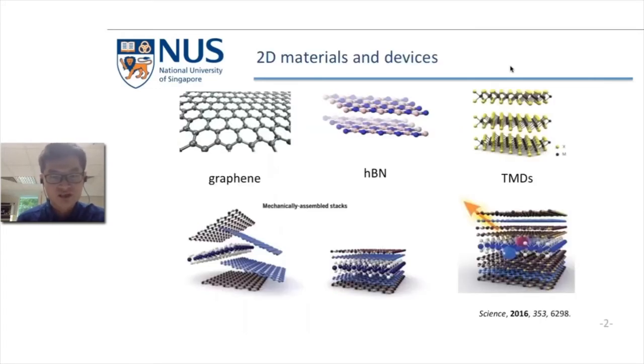2D materials have attracted general interest in the past two decades. I'll emphasize two points. First, the 2D family consists of a variety of different materials with different properties, from semi-metallic graphene, insulating hexagonal boron nitride, semi-conducting transition metal dichalcogenides, and so on.